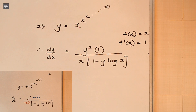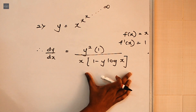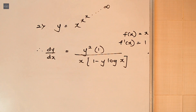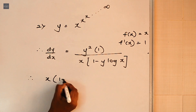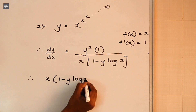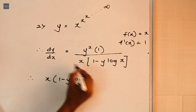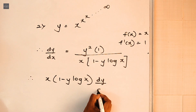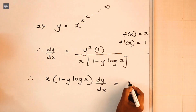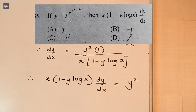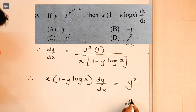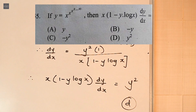People may need to rearrange the terms — in the question they have taken the denominator to the left-hand side. So rearranging: x·(1 minus y·log x)·dy/dx equals y squared. So y squared alone is the right-hand side answer, which is option D, and that's it.